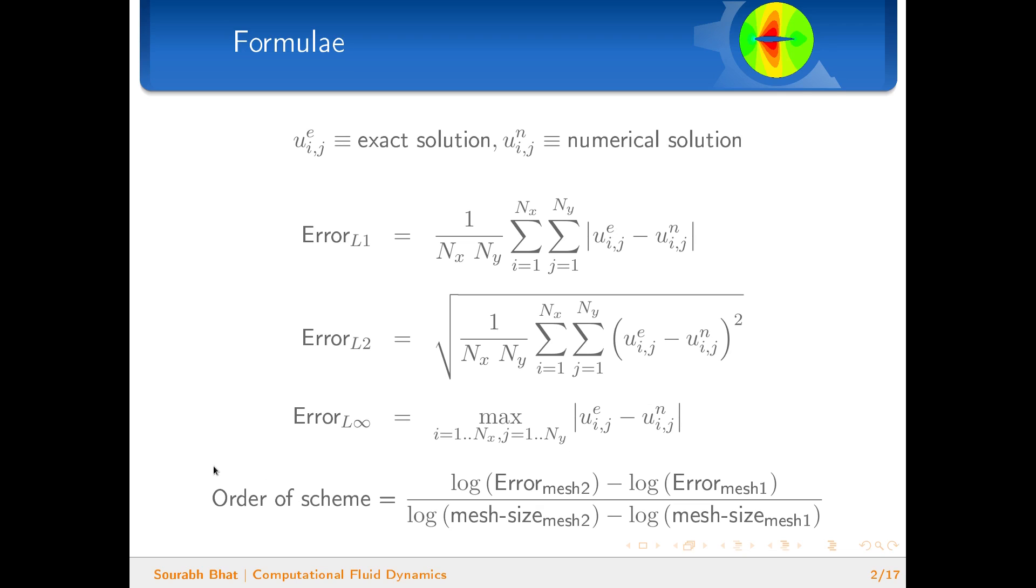In this formula it is the ratio of the difference in error to the difference in mesh size, and this can also be thought of as the slope of change in error to the change in mesh size on a log-log plot.